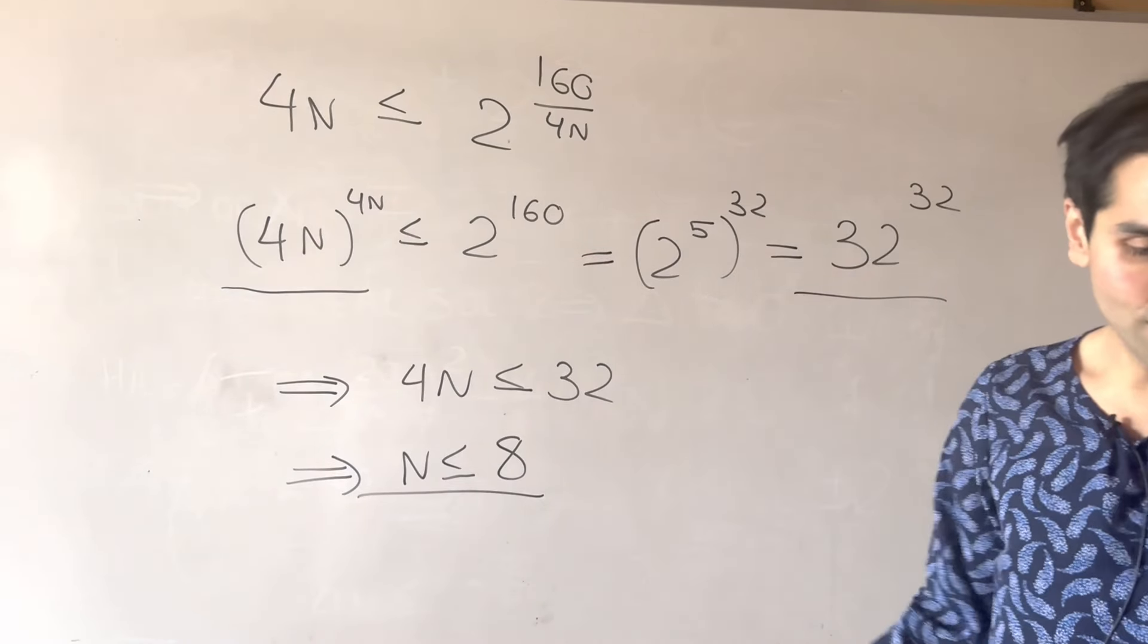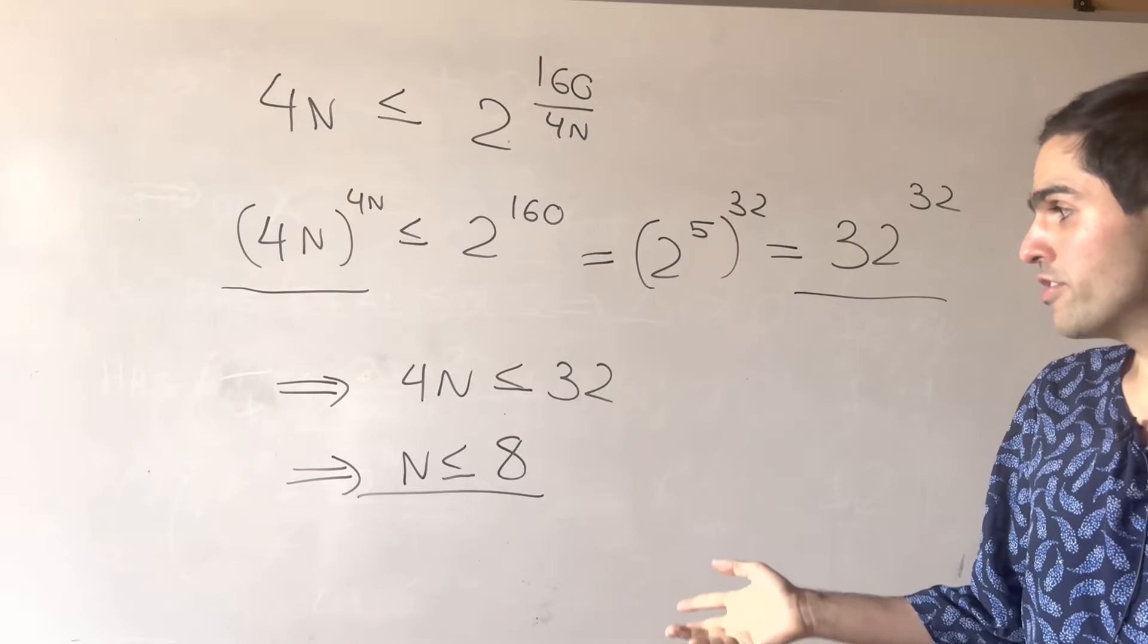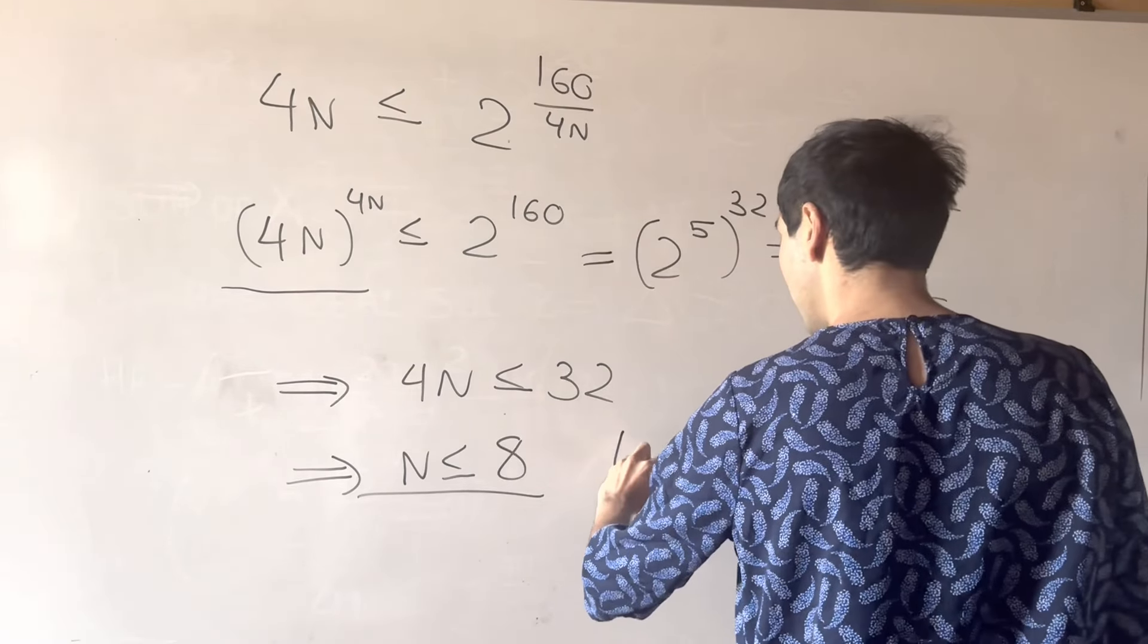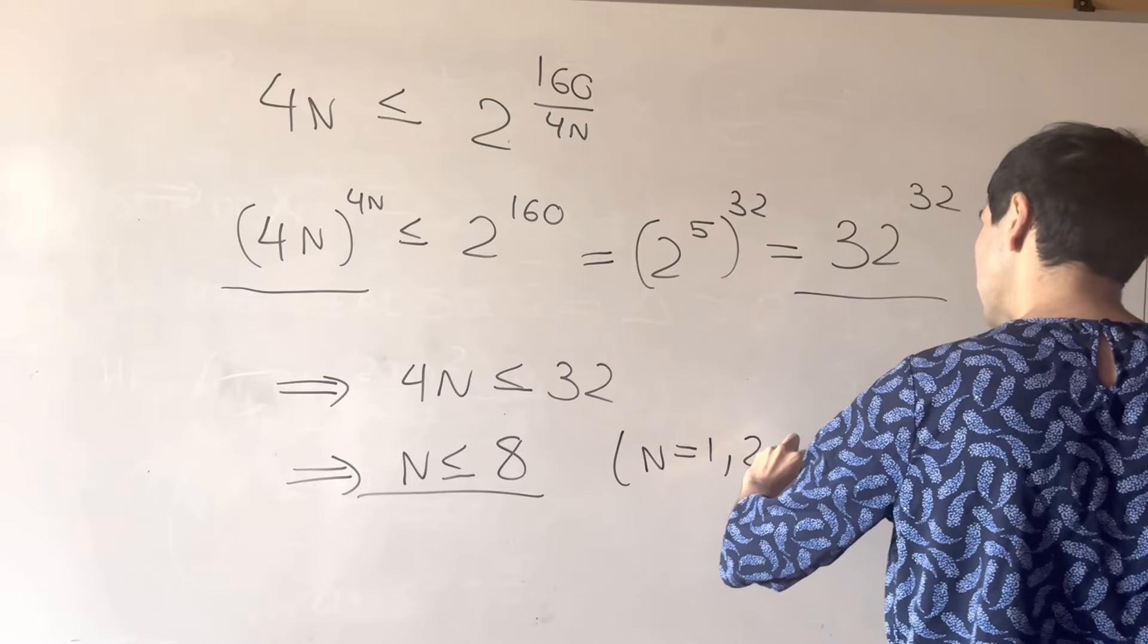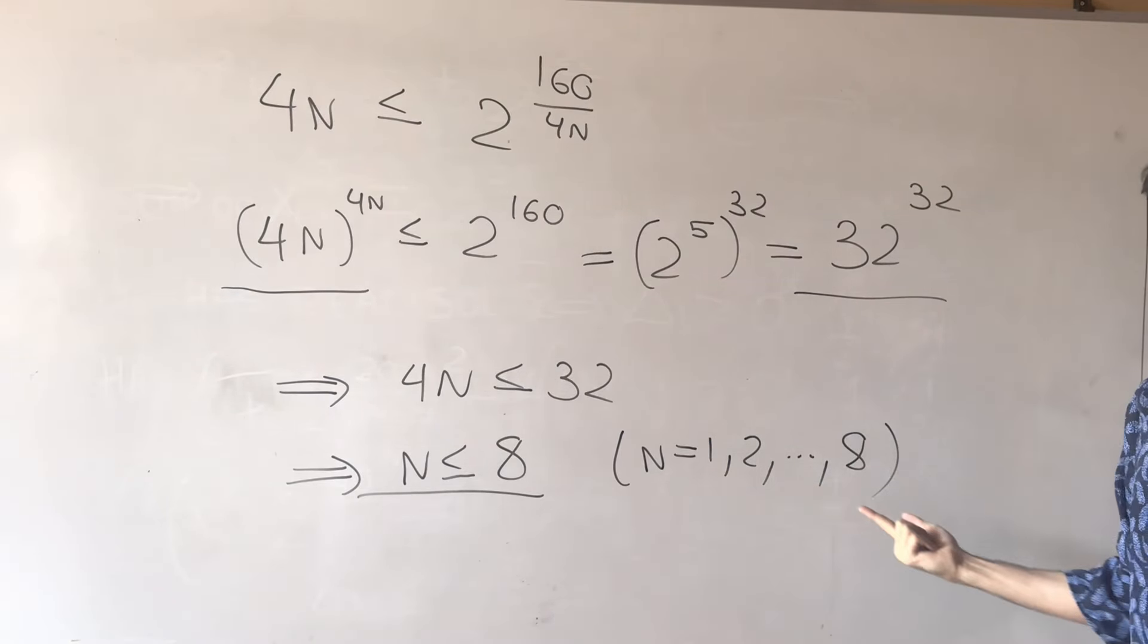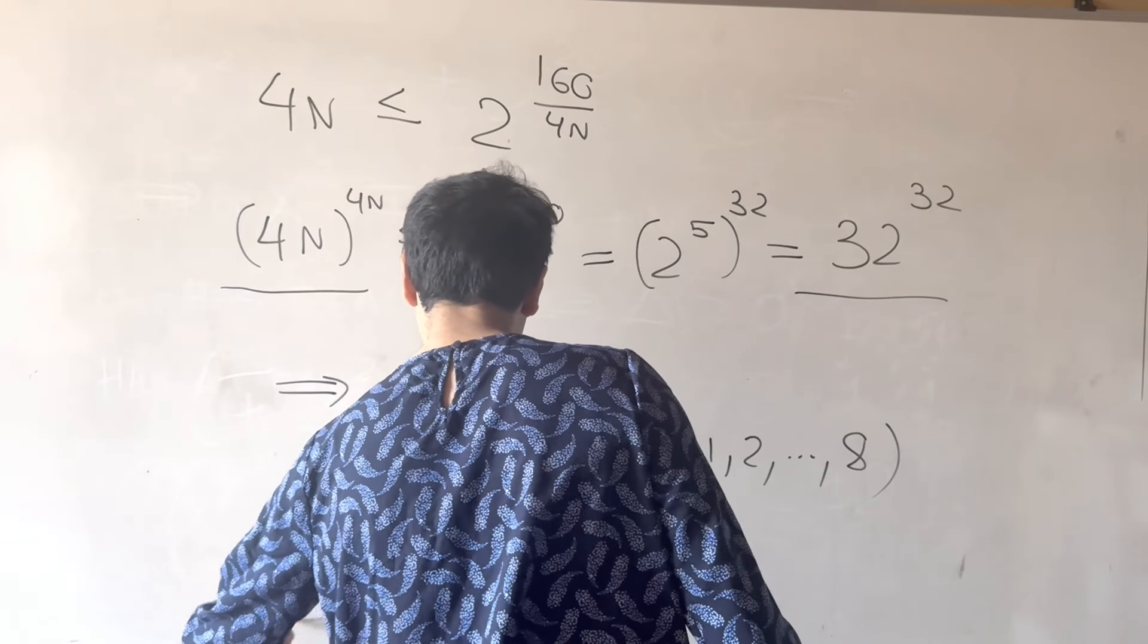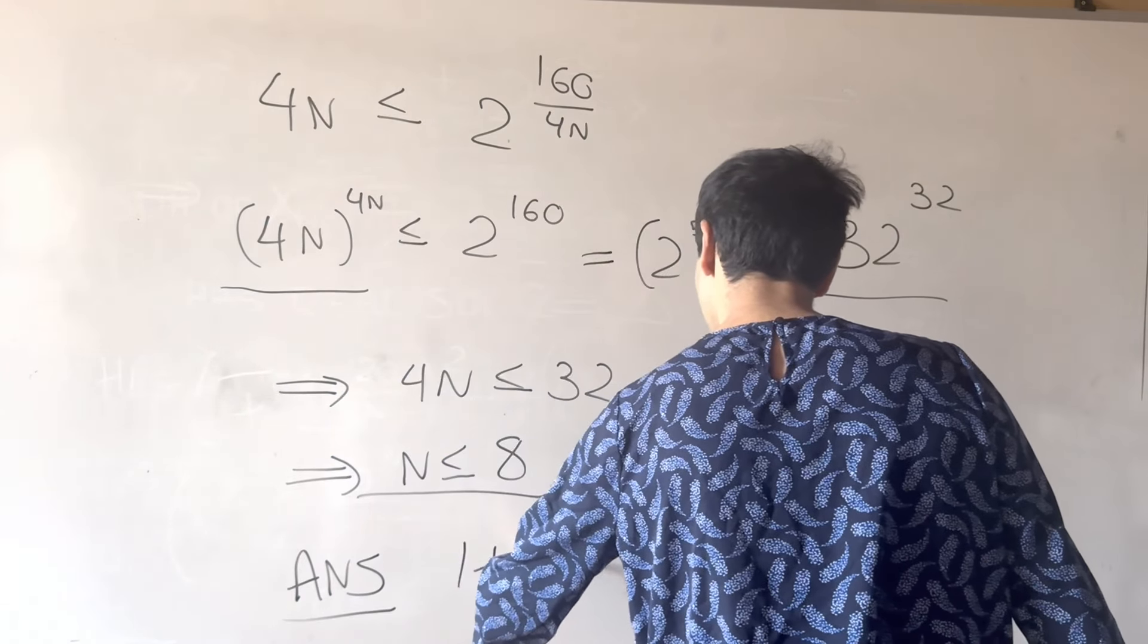And so, n has to be less than or equal to 8. And, in fact, if you notice, all the steps are reversible, so, really, all the values of n that work are n equals 1, 2, up to 8. And so, the answer is just the sum of integers up to 8.